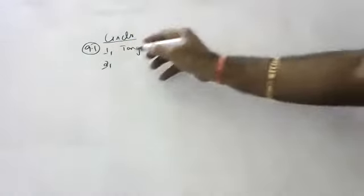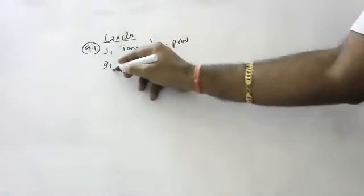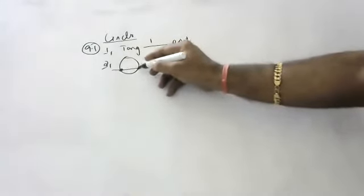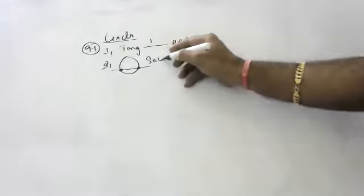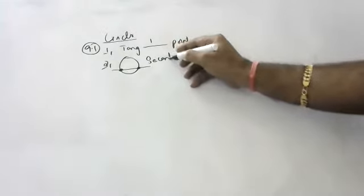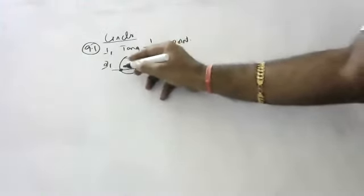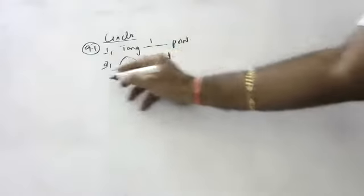A line intersecting a circle at two points — what is it called? If the line segment is inside, it is only a chord. If it is extending off, it is called a secant.